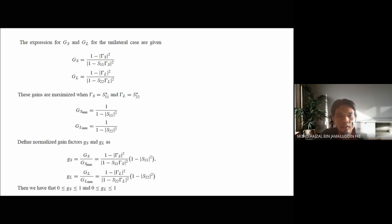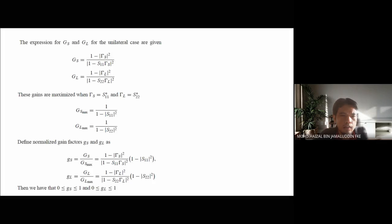In order to calculate the gain, we follow the traditional unilateral case assumption where S12 is assumed to be zero. By doing that, we can obtain the traditional G_S and G_L values, and estimate G_S_max and G_L_max. From that, we calculate the normalized gain factor to use for the constant gain circle.